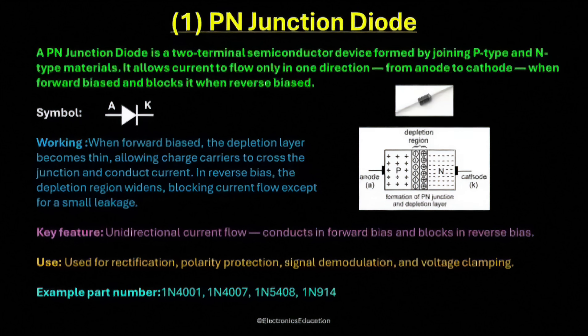The P-N junction diode is one of the most important and commonly used components in electronics. It is the simplest form of semiconductor device, yet it is used in almost every electronic circuit. Here, we will understand what a P-N junction diode is, how it works, its key features, and some of its main applications. This diode is made by joining two semiconductor materials — one P-type and one N-type.